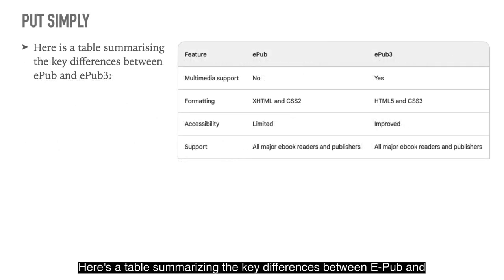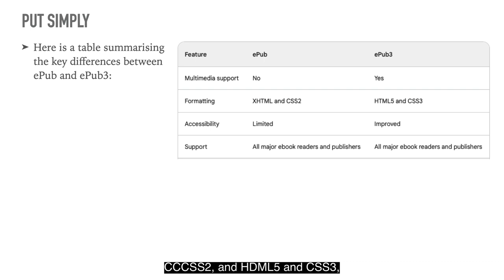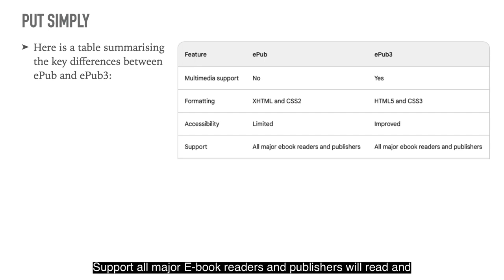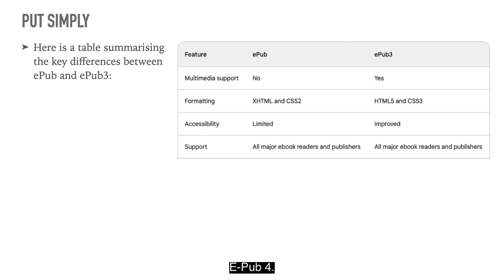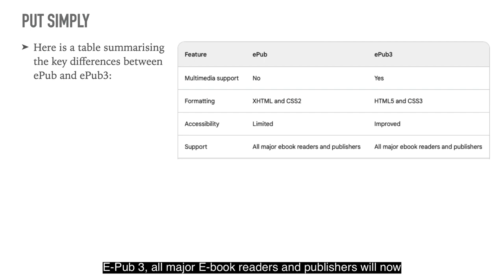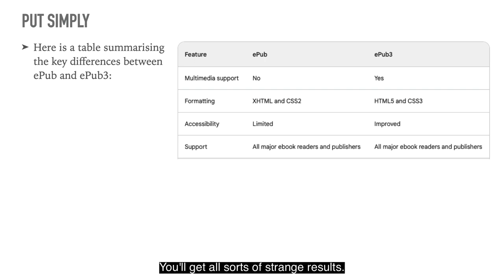Here's a table summarizing the key differences between EPUB and EPUB3. Multimedia support: no for EPUB, yes for EPUB3. Formatting: XHTML and CSS2 for EPUB, HTML5 and CSS3 for EPUB3. Accessibility is limited in EPUB and improved in EPUB3. Support: all major eBook readers will read an EPUB file. For EPUB3, all major eBook readers and publishers will now read it, but early ones won't — you'll get all sorts of strange results.